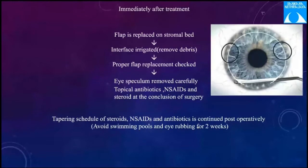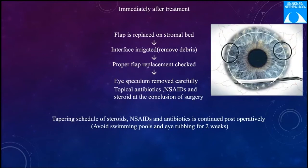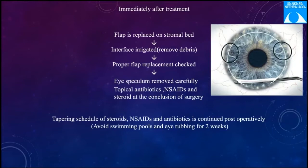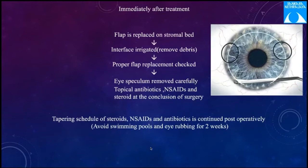After the flap is lifted, the stromal bed is dried with a Weck-cel sponge because fluid and blood can cause irregular ablation. The excimer laser ablation is then applied quickly before excessive stromal dehydration occurs. A flap protector can be placed to protect the flap from laser ablation. Immediately after ablation, the flap is replaced on the stromal bed, the interface is irrigated to remove any debris, and proper flap replacement is checked by ensuring the peripheral gutter is symmetric and even. Asymmetric ink marks placed on the cornea pre-operatively are helpful if a free cap occurs during the procedure. The eye speculum should be removed carefully, and topical antibiotics, NSAIDs, and steroids are applied on a tapering schedule. The patient is asked to avoid swimming pools and eye rubbing for at least two weeks.